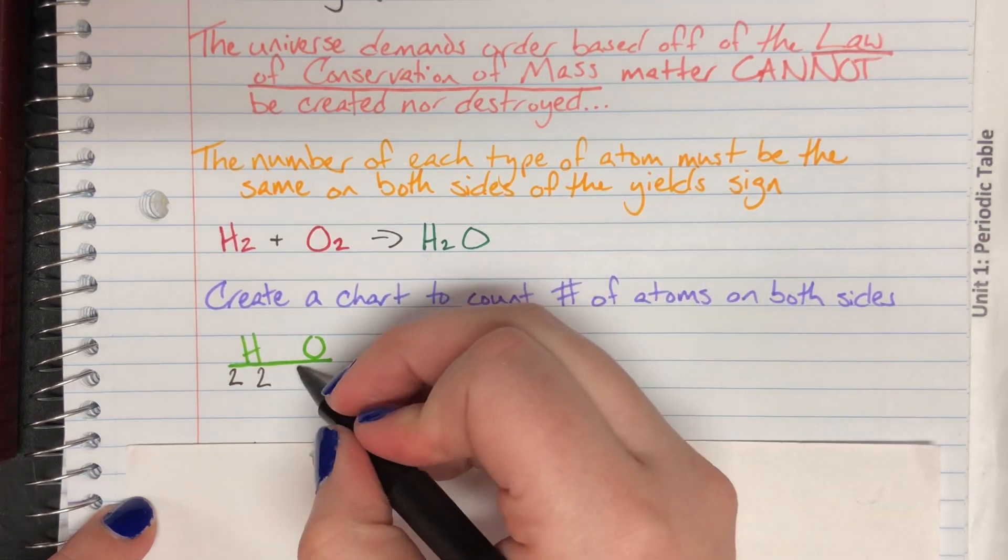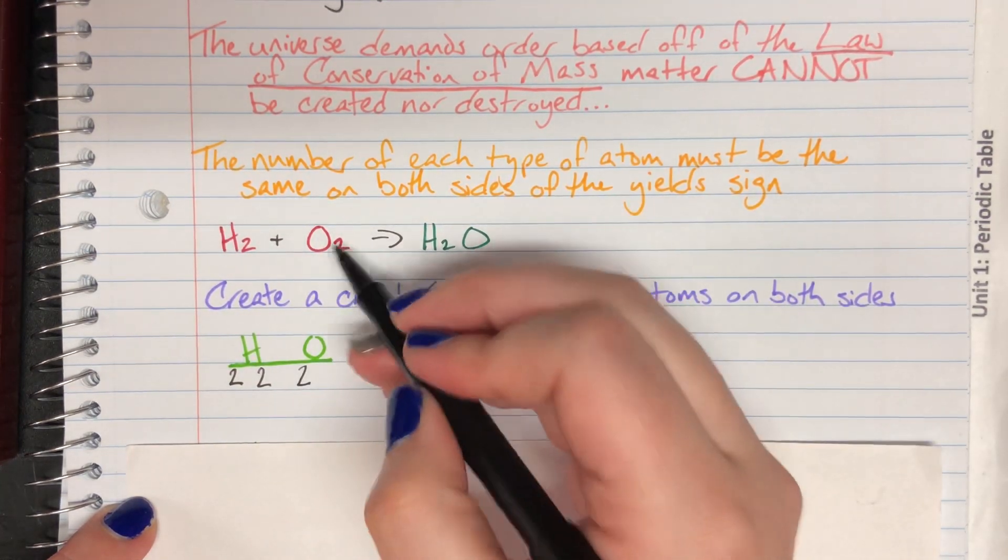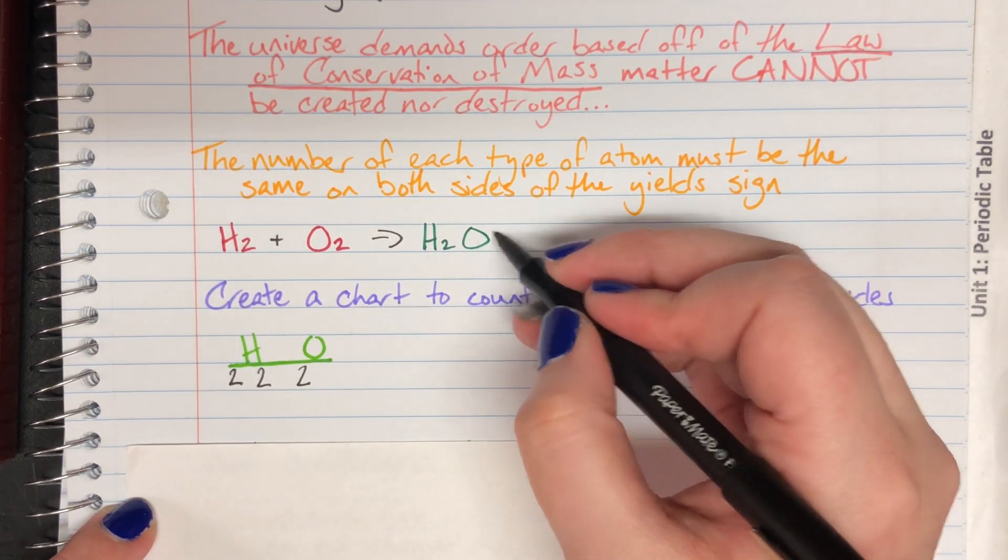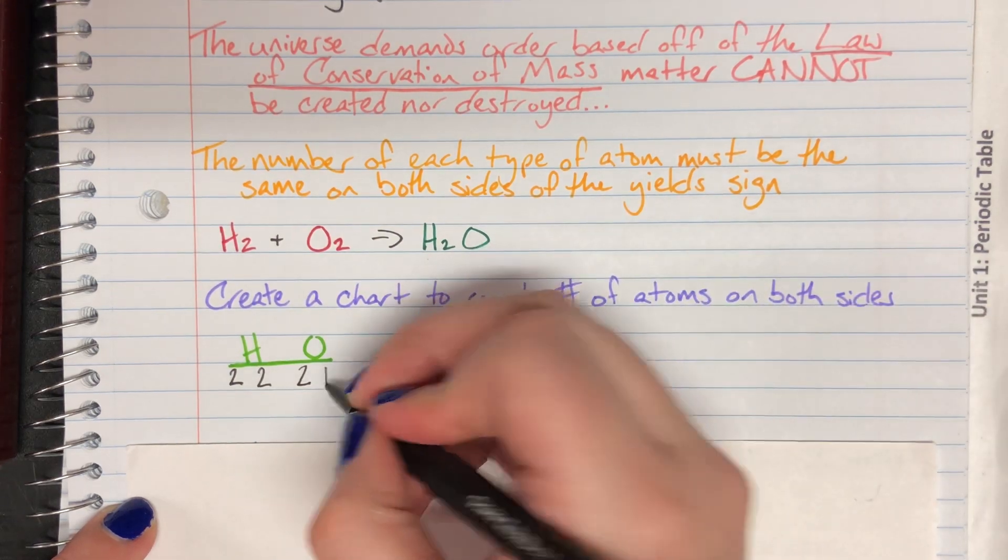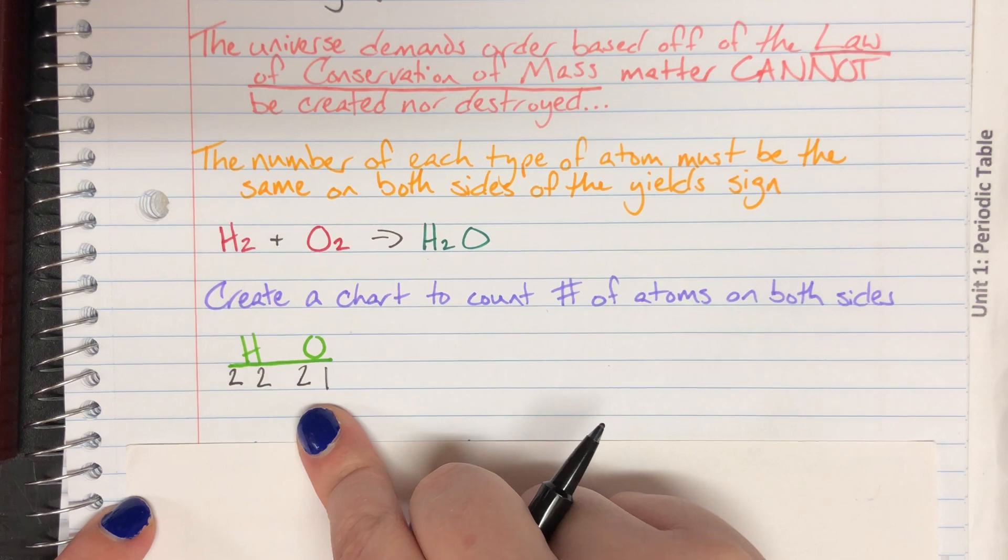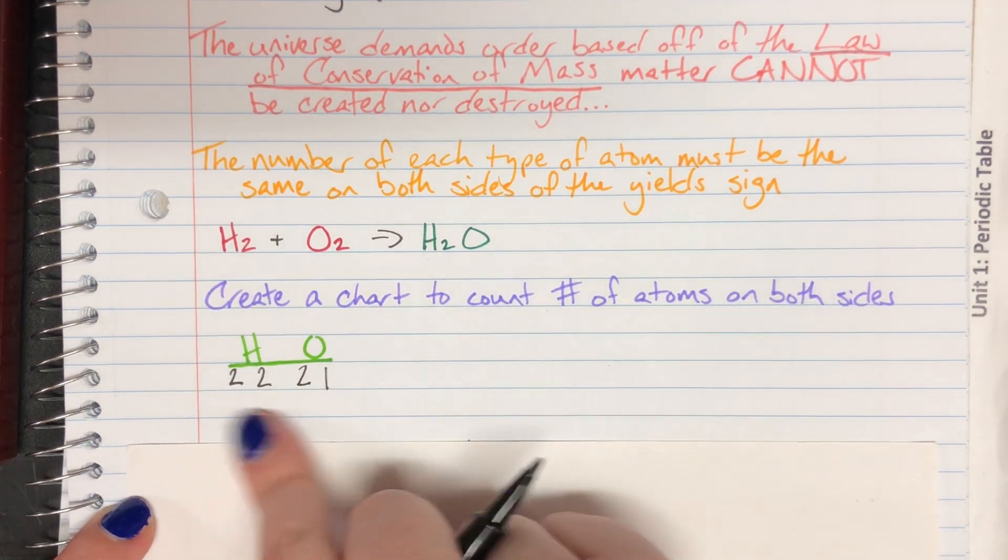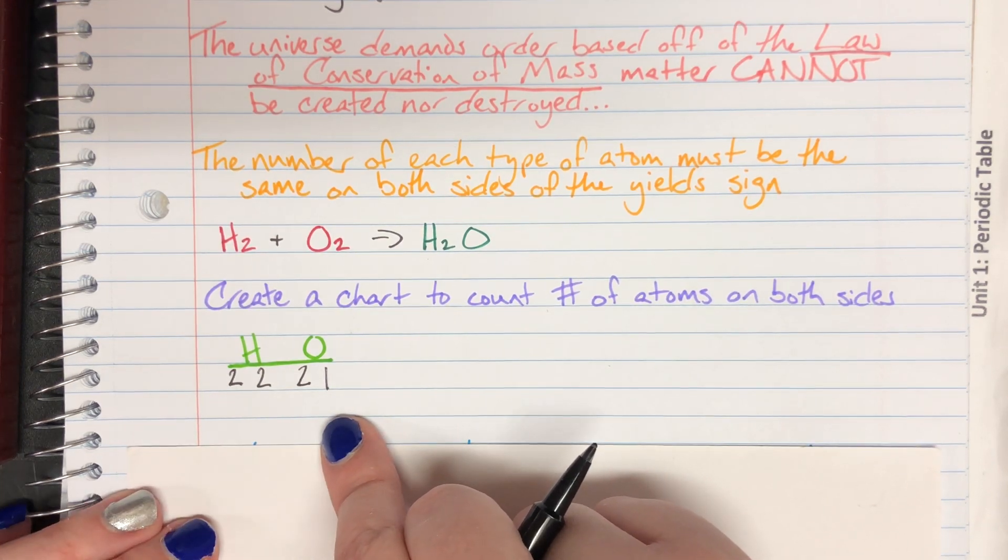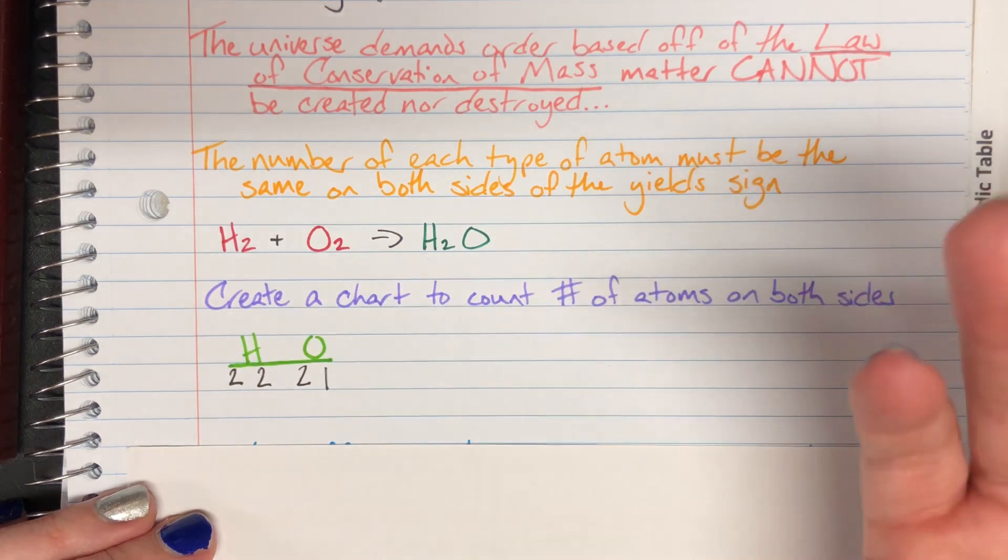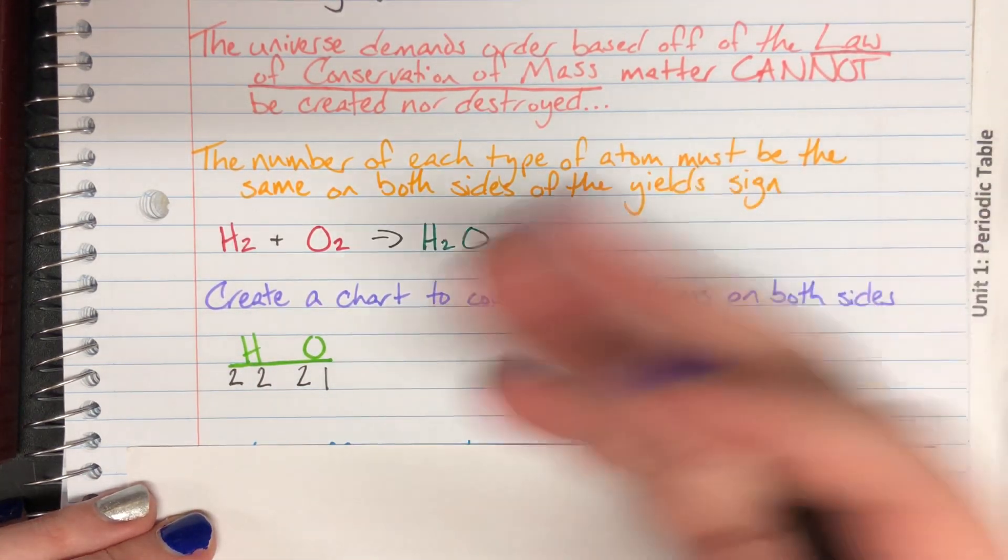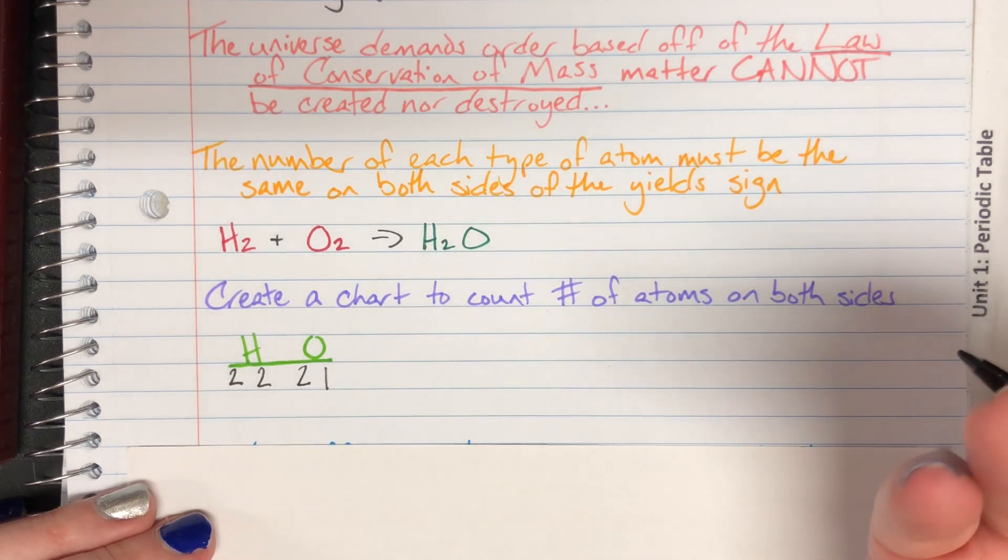Now I can move on to counting my oxygen. Oxygen on the left hand side has two because of that subscript. Whereas oxygen on the right hand side, I don't have a subscript, which means it's an invisible one. That means my count is not even on both sides. I have to even this out using something called a coefficient. Those are the large numbers that go in front of my compounds that will help multiply up to enough elements.